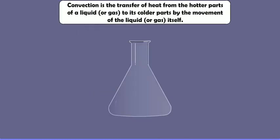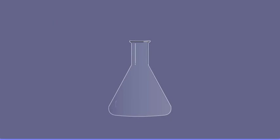Convection is the transfer of heat from the hotter part of a liquid or gas to its colder parts by the movement of the liquid or gas itself. We can see the path of convection currents of hot and cold water during heating by dropping a crystal of potassium permanganate into the water to color it.